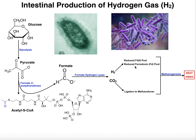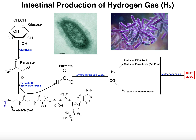The same thing is true for the reduced ferredoxin pool. Hydrogen is going to be used — the electrons from it — to generate a reduced ferredoxin pool, and then reduced ferredoxin will in turn be used in several reactions in methanogenesis to perform reductions. We had to generate these two things, but in particular the hydrogen gas, because we can get CO2 from other sources, and now we're going to see methanogenesis.